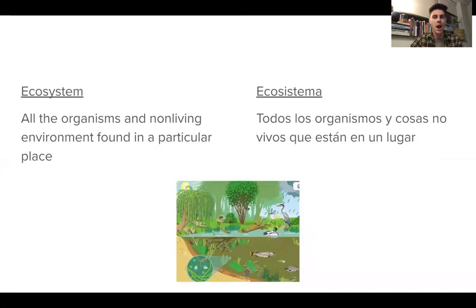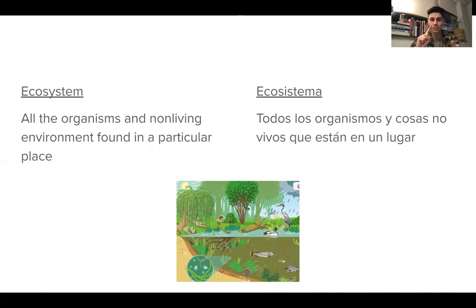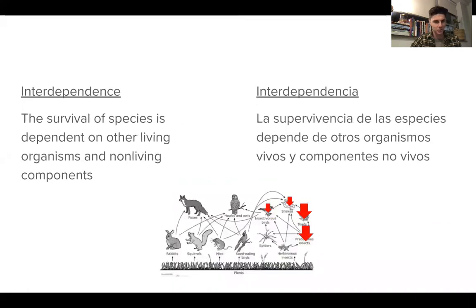An ecosystem — now we're talking about levels of organization. We've learned this, so hopefully this is familiar. An ecosystem is all of the living and non-living parts of a particular place. So this includes plants, animals, bacteria, water, wind, dirt, sand — all of it. And as we saw in interdependence, all of those things are connected.